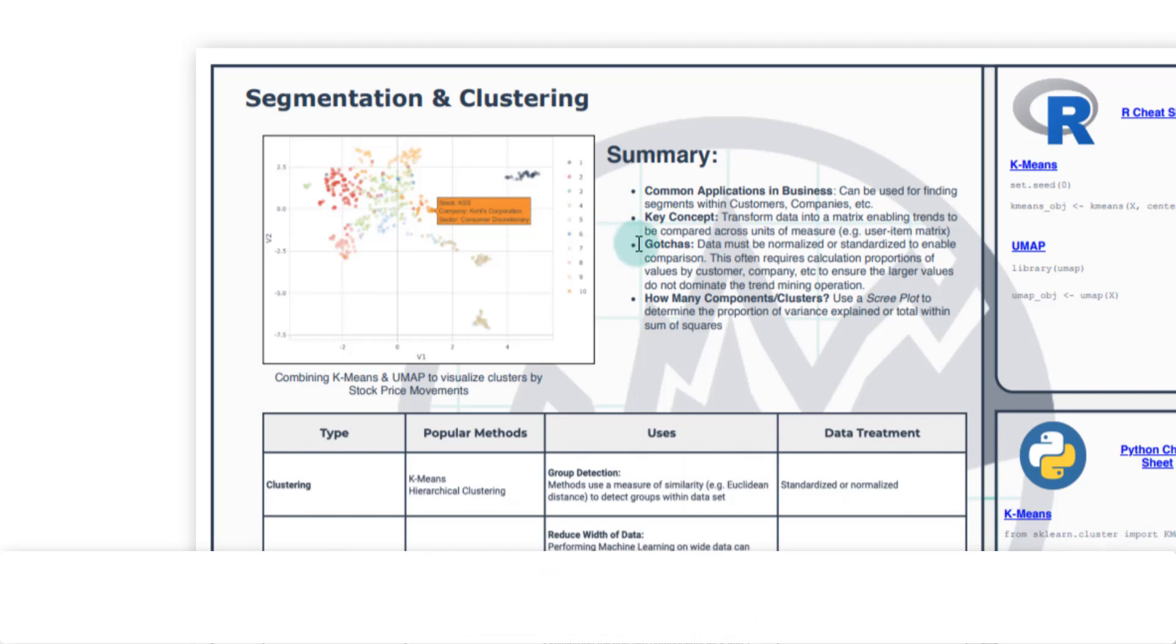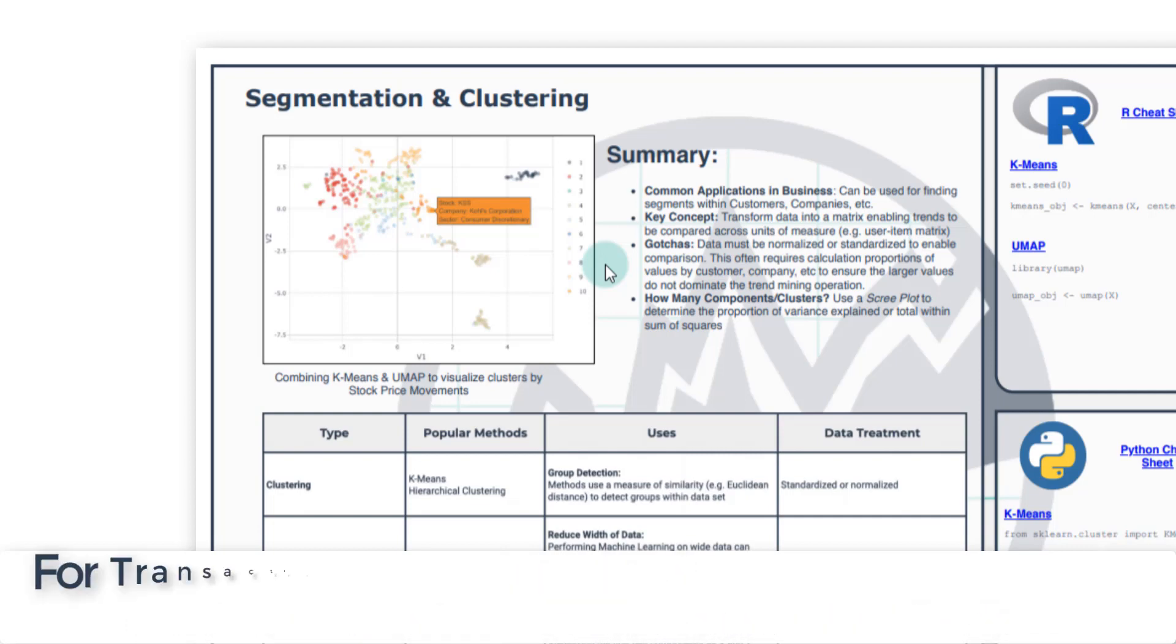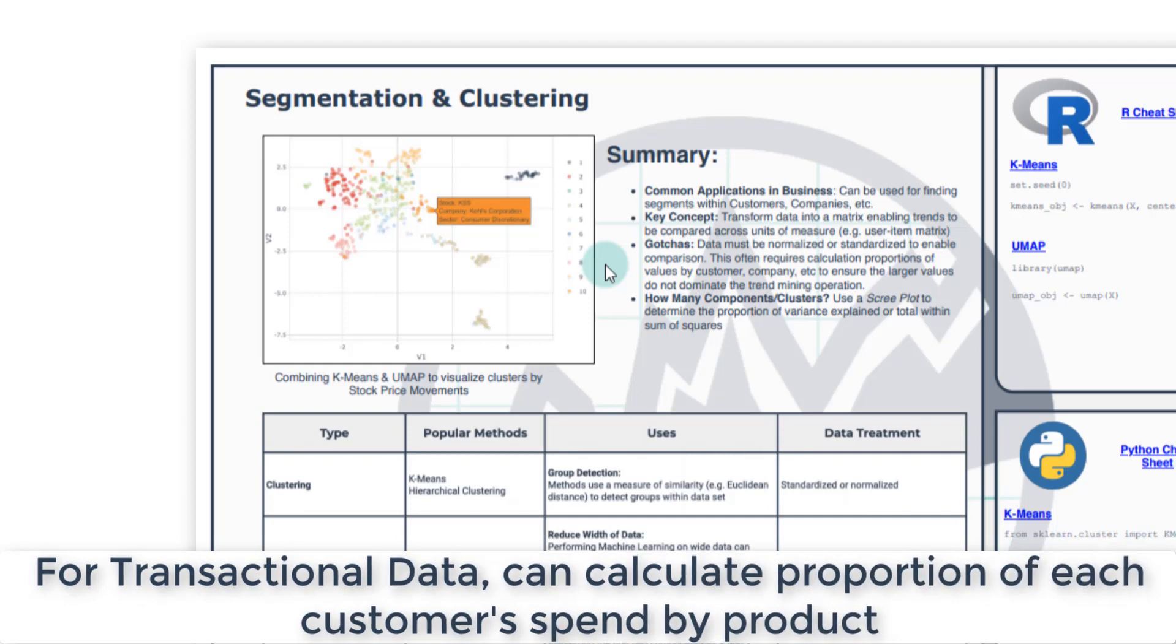Some of the gotchas you'll run into quite frequently: if you're trying to compare customers to each other using sales data, oftentimes that can be a very skewed measurement because some customers will buy a lot more. They may buy monthly on average ten thousand dollars of product whereas another customer might only do a hundred dollars. What we need to do is standardize that through a process of grouping by those customers and instead of doing a total, usually doing a proportion. So converting it to instead of total sales numbers for that month, what proportion of sales went to product X, product Y, and so on.